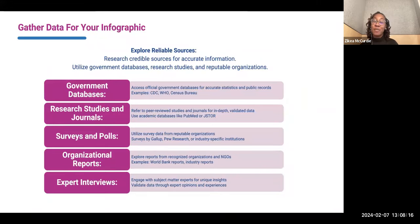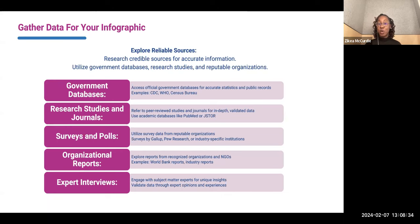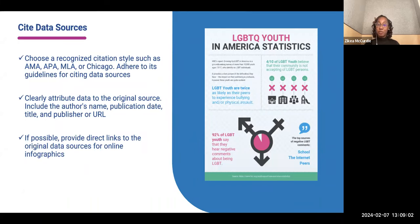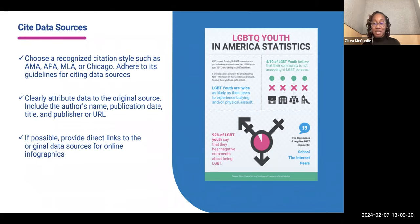Once you've determined what you want to share, it's time to gather data for your infographic. Make sure you're using reliable sources — research credible sources for accurate information. Some of those sources may be government databases, research studies, surveys and polls, organizational reports, and expert interviews. Once you've found the data, cite the data sources on your infographic using a recognized citation style like AMA, APA, MLA, or Chicago. Clearly attribute the data to the original source, and if possible, provide a direct link to the original data for online infographics, as shown in the example where the source is written at the bottom.